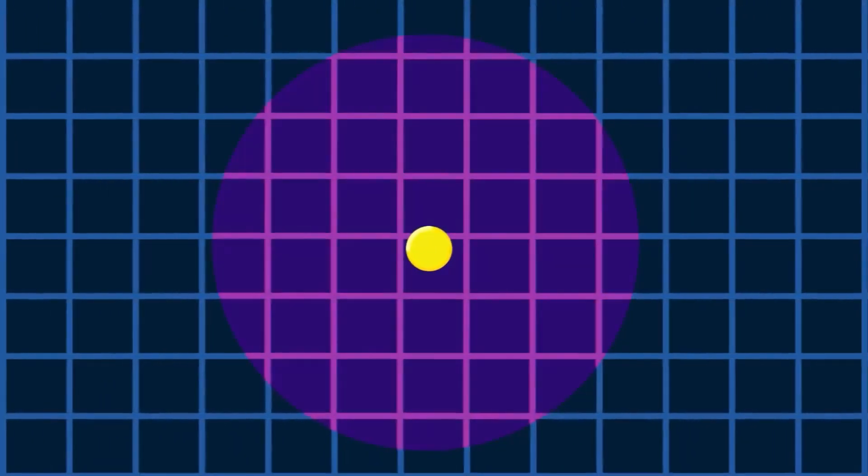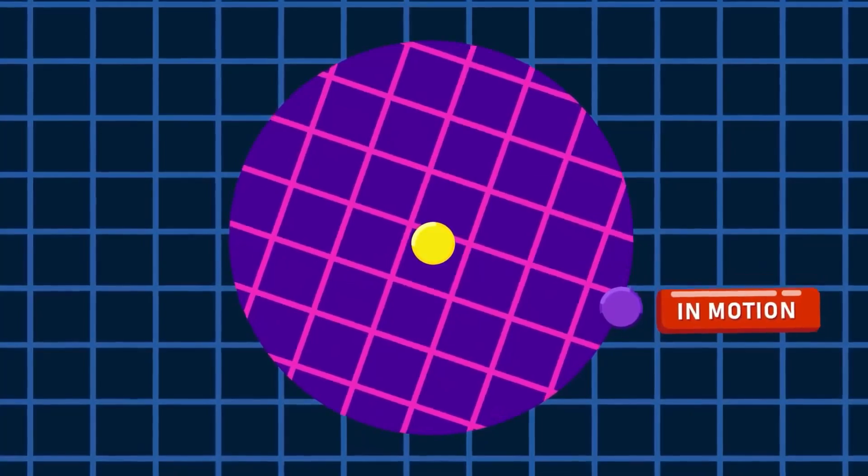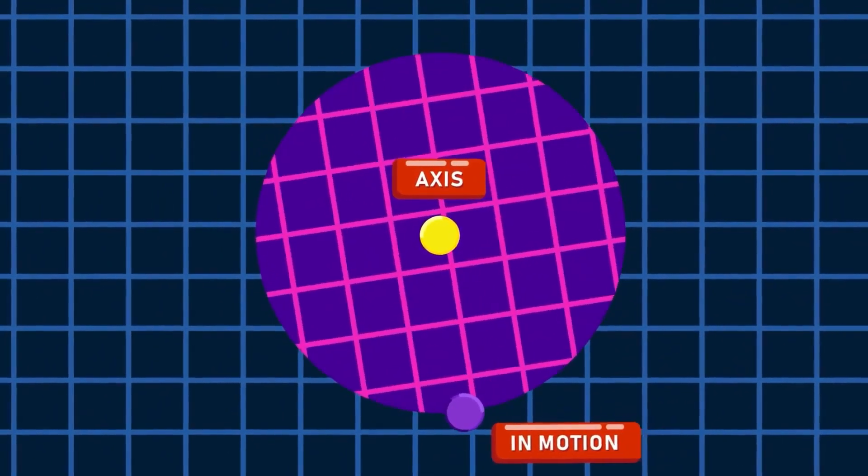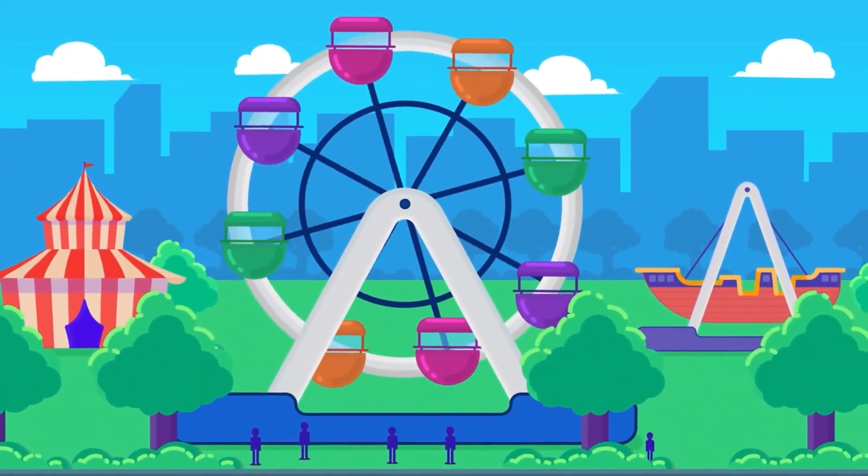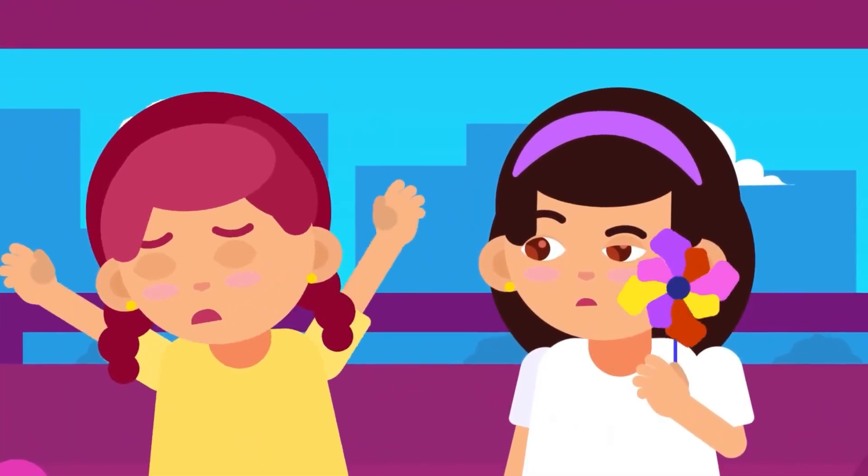Rotational motion: The type of motion in which a body rotates around a fixed point or axis is called rotational motion. For example, the motion of the ferris wheel, or the motion of the wind vane when the wind strikes it.